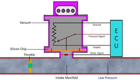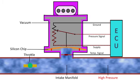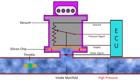Similarly, on the basis of high and low pressure, there is the bending of the silicon chip. Accordingly, the resistance changes and the voltage output changes.